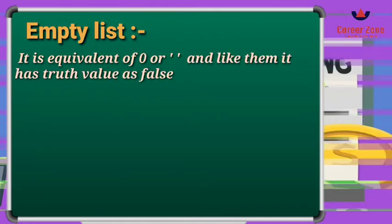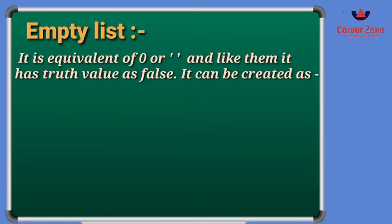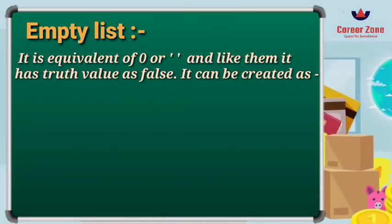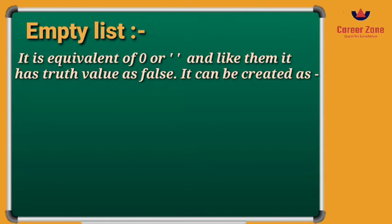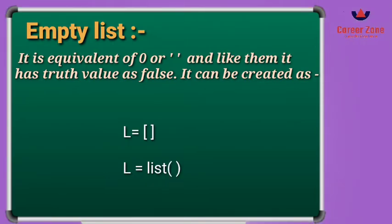In the fourth example there is no value — it is an empty list. An empty list is equivalent to zero or a single quote with no value, meaning it has a truth value of false. An empty list can be created in two ways: first, by writing l equal to square brackets containing nothing, and second, by using the built-in list() function.